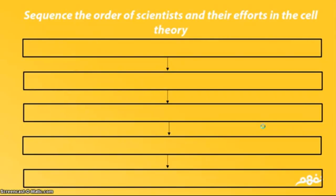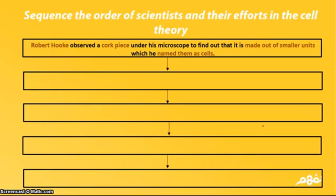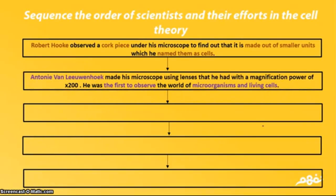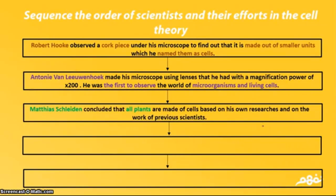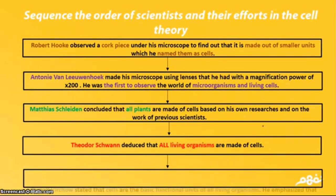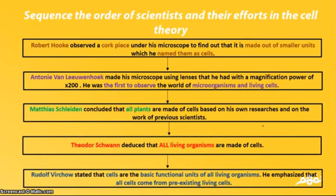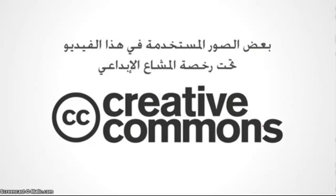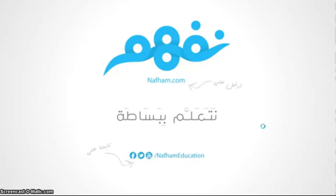To sequence the scientists: first, Robert Hooke observed a cork piece and called the small units cells. Then Anthony van Leeuwenhoek made his own microscope and was the first to observe microorganisms and cells. Matthias Schleiden concluded that all plants are made of cells. Theodor Schwann concluded that all living organisms are made of cells. Finally, Dr. Rudolf Virchow stated that cells are the basic functional units of living organisms and that all cells come from pre-existing living cells. I hope you benefited from this video and got a good idea of what the cell theory is. Thank you for watching!